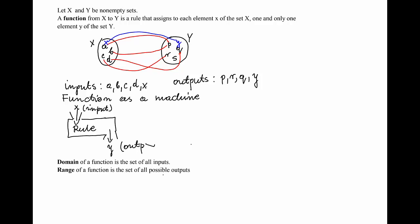Values of x are often called independent variables, and y, since it depends on x, is called the dependent variable. Often y is also called the value of the function at x.